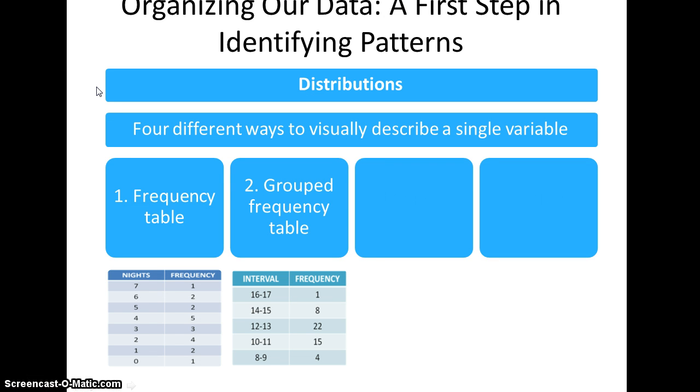Remember last time we talked about the first of the four different ways that we can identify patterns in our data, the first being the frequency table. This time we'll be talking about the grouped frequency table. You'll notice that the difference is that there is an interval for the grouped frequency table, and for the frequency table we simply have a single score per row.